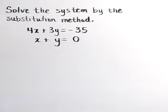Solve the system by the substitution method. We have the equations 4x plus 3y is equal to negative 35 and x plus y is equal to zero.